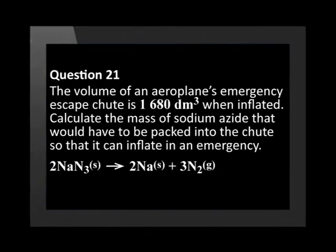The volume of an airplane's emergency escape chute is 1,608 when inflated. Calculate the mass of sodium azide that would have to be packed into the chute so that it can inflate in an emergency.